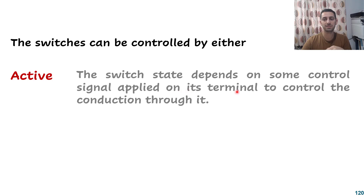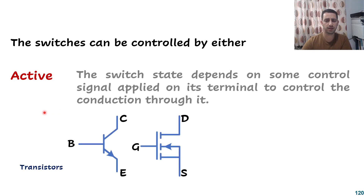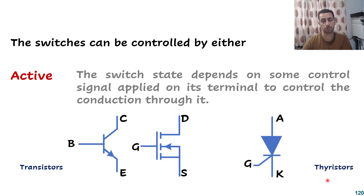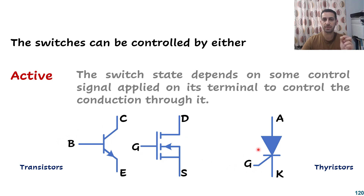The other way to control switches is the active way, where the switch state depends on some control signal applied on its terminals to control conduction through it. Examples include transistors, where we have the base, collector, and emitter — and for the MOSFET, the gate, drain, and source. The conductivity through the collector-to-emitter path is controlled by the signal applied on the base. Similarly for the MOSFET, it's controlled by the signal on the gate. Another example is the thyristor, which is like a diode with anode, cathode, and a gate — but instead of depending on the anode voltage alone to turn on, it will wait for a pulse on the gate terminal.